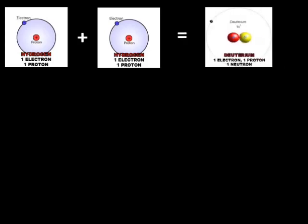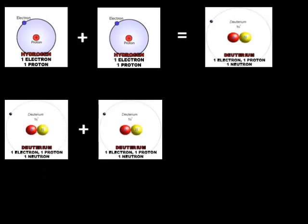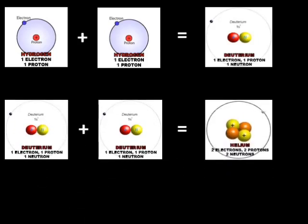So we have two hydrogen nuclei fusing together to create a deuterium nucleus. If we fuse together two deuterium nuclei, we get a helium nucleus. This is the basic process of how the higher level elements are created from lower level elements.